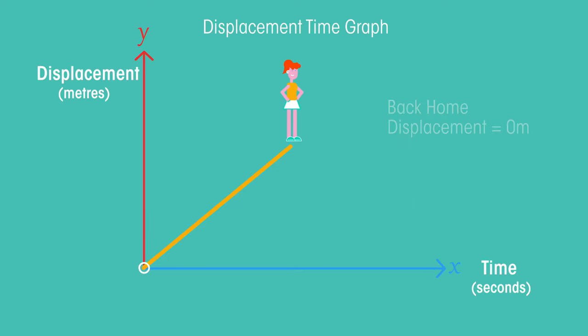If Alice stands still at any point, time will increase, but her distance will not change. This will mean that we draw a straight line across the plot.